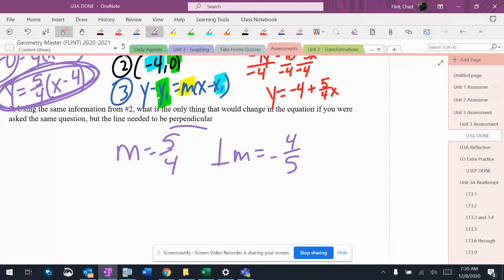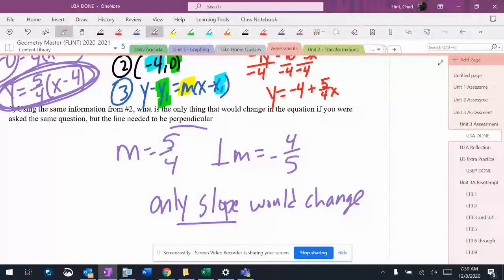So the only thing that would change would be the slope. Only the slope would change. Everything else would stay exactly the same.